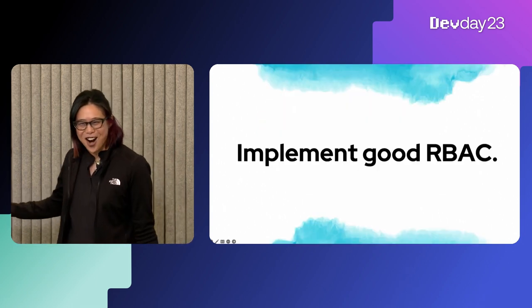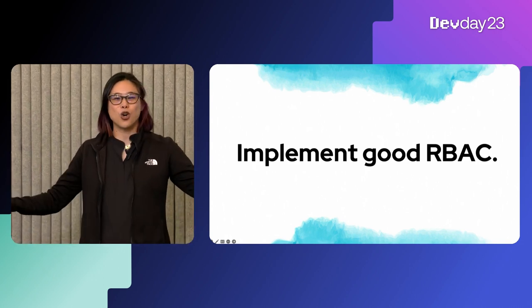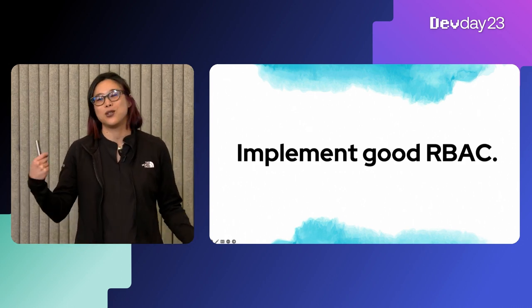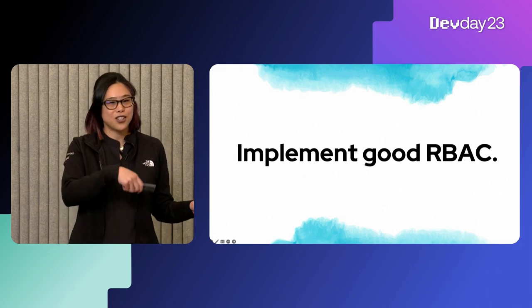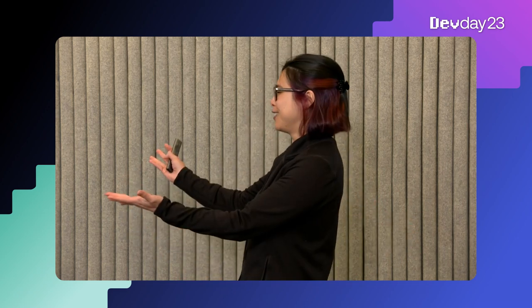Number seven: implement good RBAC — role-based access control. There should be clear permissions between what your admin roles can do and what your user roles can do. Do this internally in your company, but also build these features into your product. This can help prevent people from stumbling across PII through accidental exposure or insider threat. If you don't have good RBAC, your summer intern is going to get access to admin credentials, make a bunch of configuration changes, leave, and then you have to fix it. So have good RBAC.